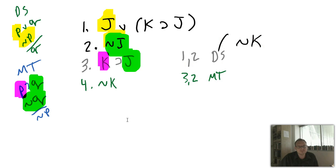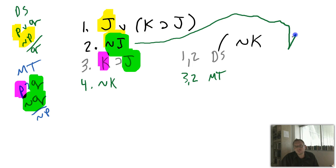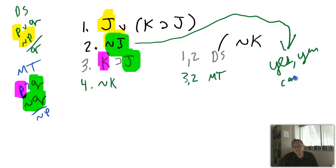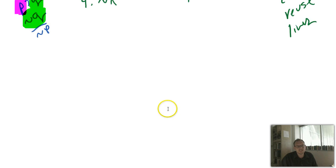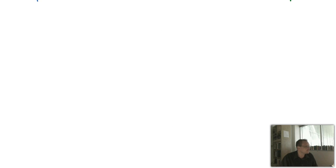Remember my conclusion is to get not K. I have K here — I could reuse line two and set up a modus tollens. Modus tollens: P then Q, not Q, then you must not have P. I have not J here and a J here, so I can conclude not K. Line four is not K — lines three and two, modus tollens. Notice we can reuse a line — just because I used this for the first step doesn't mean I couldn't use it again.